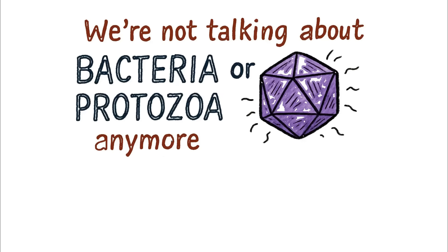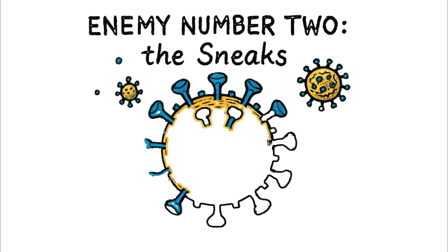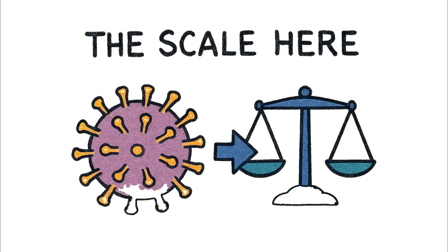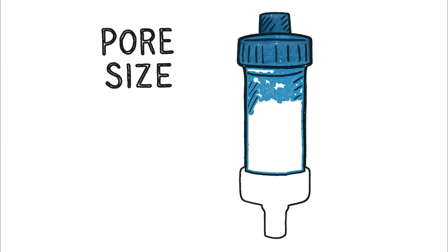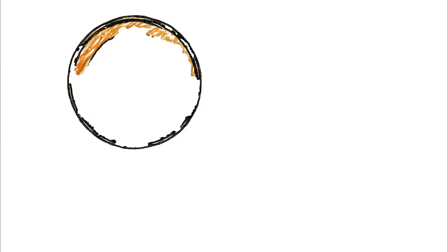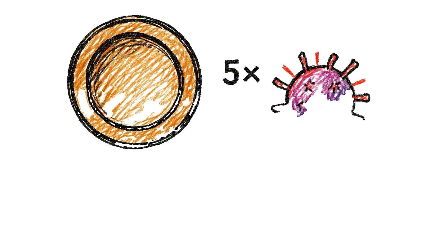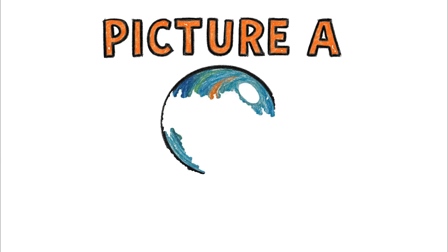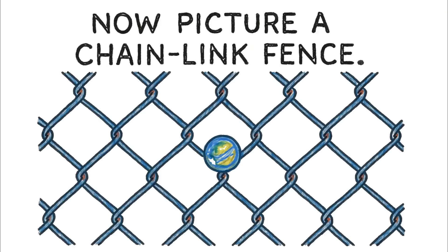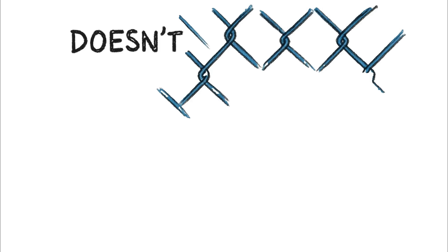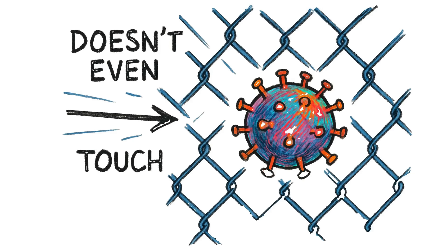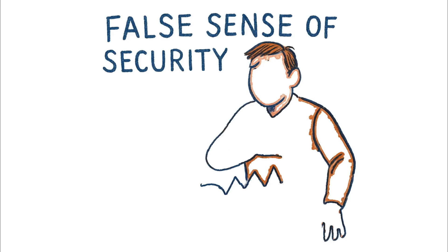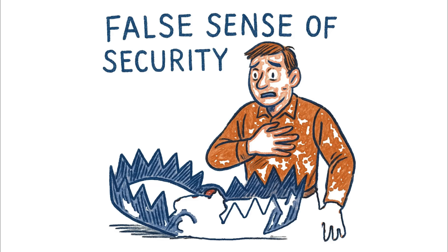Mechanical filters are fantastic goalies against these Giants, but what happens when the enemy is smaller than the holes in the net? When the enemy is microscopic, like a virus, your expensive water filter becomes nothing more than a pasta strainer trying to hold back sand. This is enemy number two: the Sneaks — viruses like rotavirus and hepatitis A. Your standard backcountry filter has a pore size of about 0.1 microns, but the virus you're trying to stop is five times smaller, clocking in at 0.02 microns. Picture a tiny glass marble and a chain-link fence — that marble, your virus, doesn't even touch the sides as it sails right on through. All that gear, all that money spent, becomes a stage prop giving you a false sense of security. And in a survival situation, that is the deadliest trap of all.